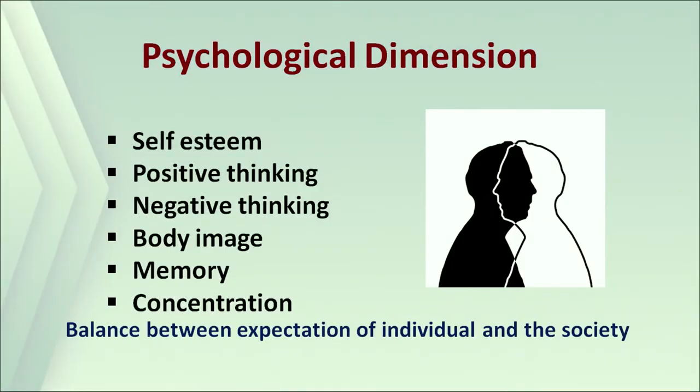Now we will talk about psychological dimensions. In a balanced situation with the expectations of the individual and the society, if a person has self-esteem, positive thinking, negative thinking, body image, memory, and concentration — these are different quality of life perceptions in the psychological dimension.